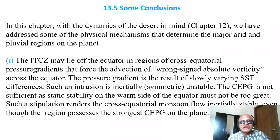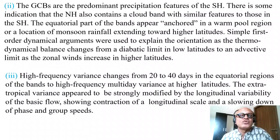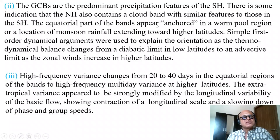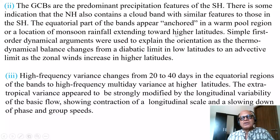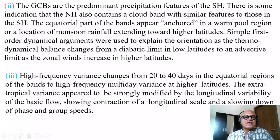The great cloud bands are the predominant precipitation features of the Southern Hemisphere. There is some indication that the Northern Hemisphere also contains a cloud band with similar features — we call this the Mayu-Bayu cloud band, or the front-equatorial band. Parts of the bands appear anchored in a warm pool region or a location of monsoon rainfall extending towards higher latitudes.